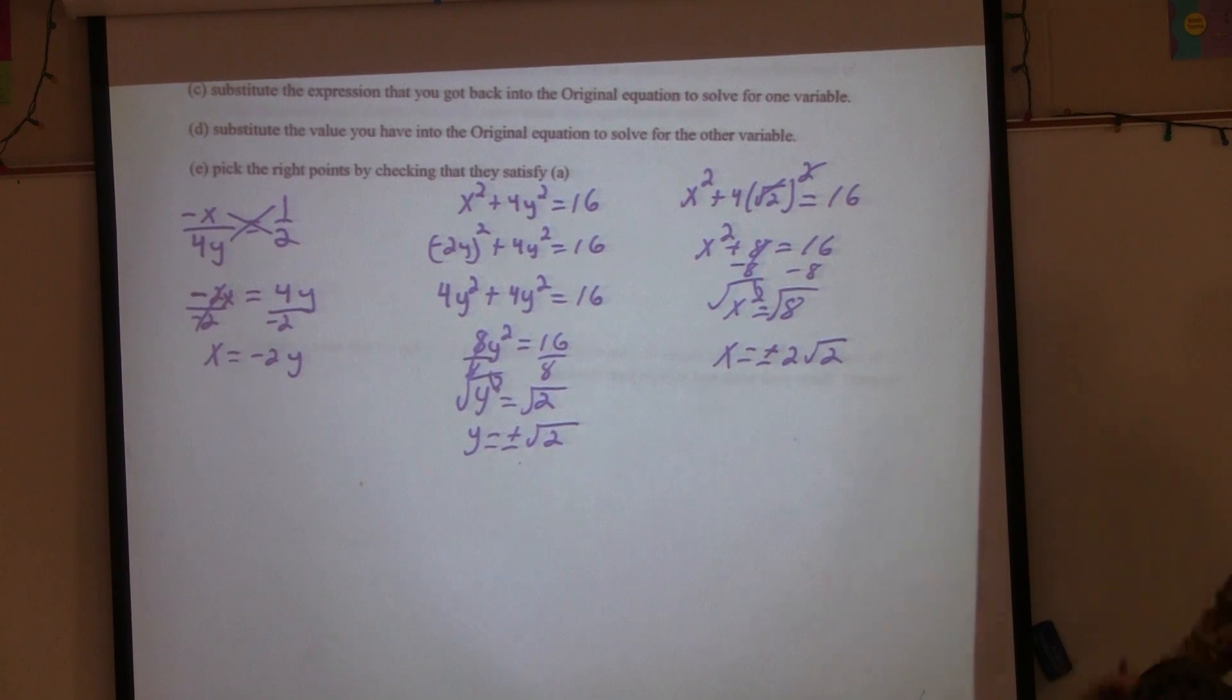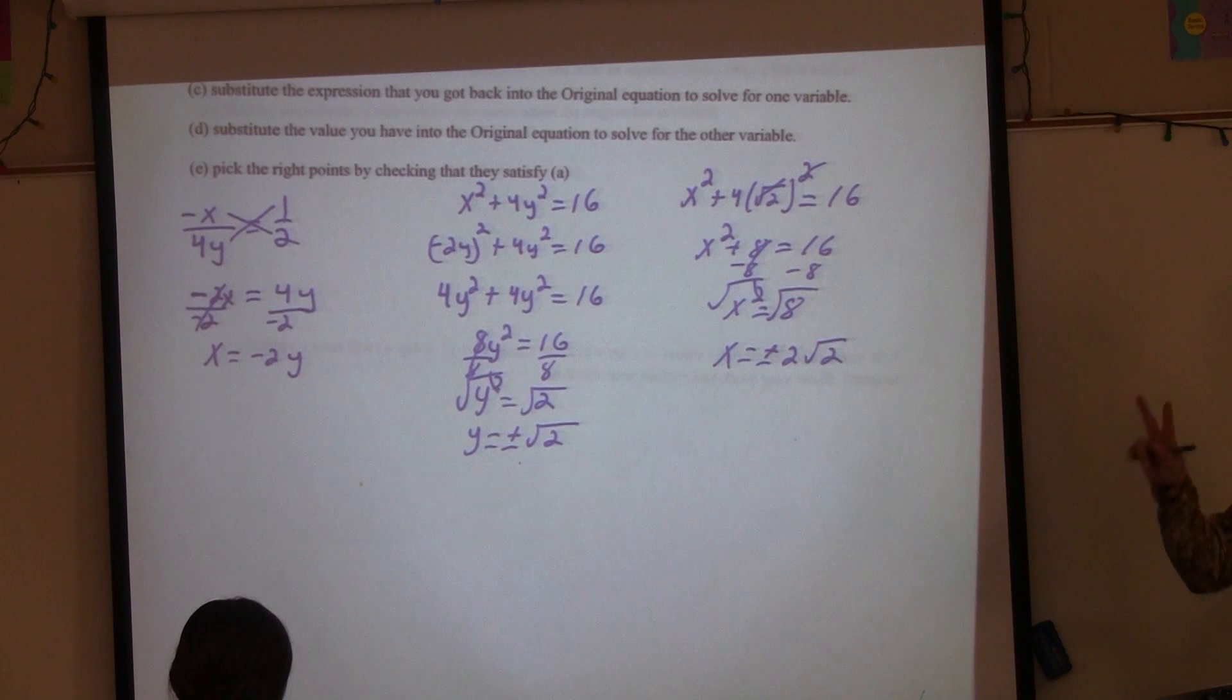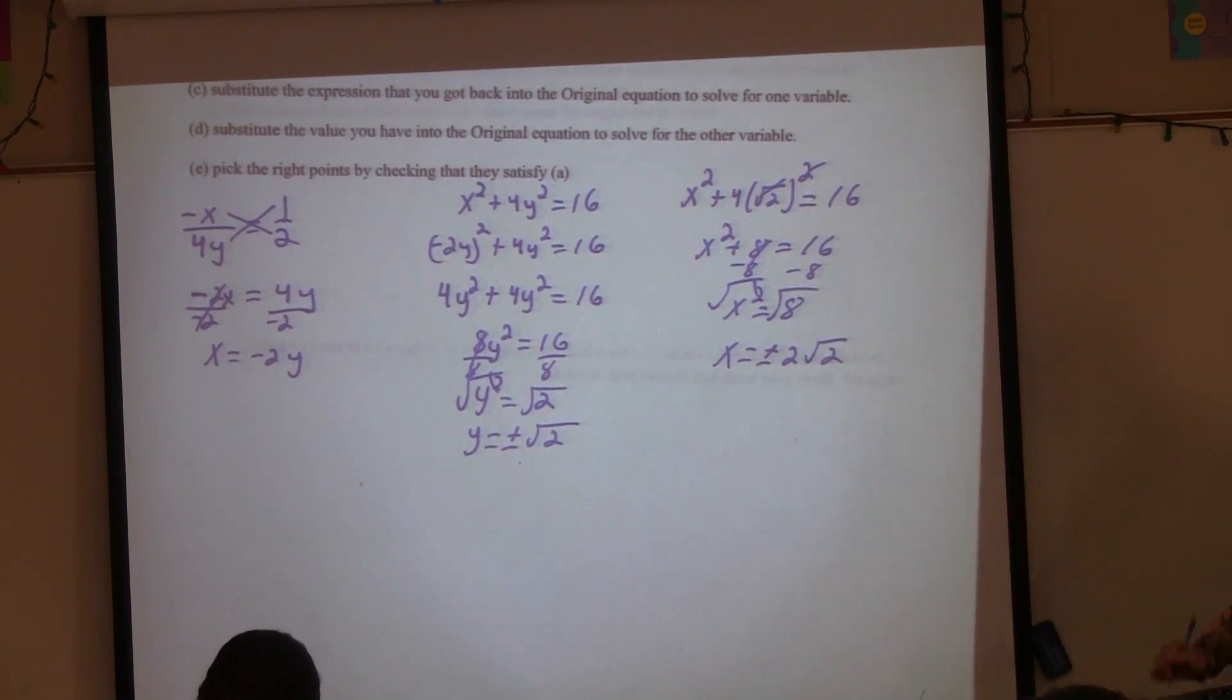So now how many possible points am I going to have? Not two. Four. There's four possible combinations that could exist.